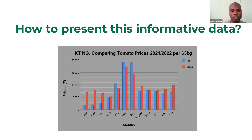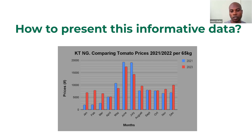You can see from this chart price information based on tomato from Nigeria, per 65 kg, for two years: 2021 and 2023. From January up to April in 2021, the price is low compared to 2023, which is the period where we normally have growth in the market. From May to June, the price in 2021 is high, while 2023 is following the trend but a bit lower. This means that when we started collecting this information in 2021 and analyzed it at the beginning of 2022, we shared this data to the farmers and tried to create awareness.